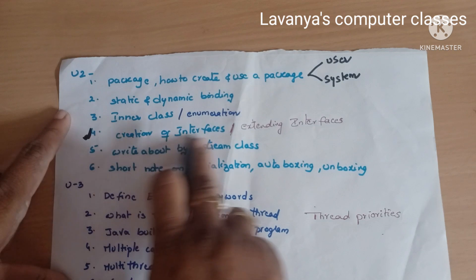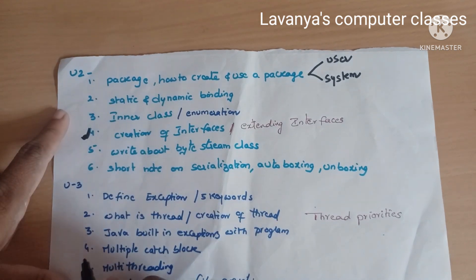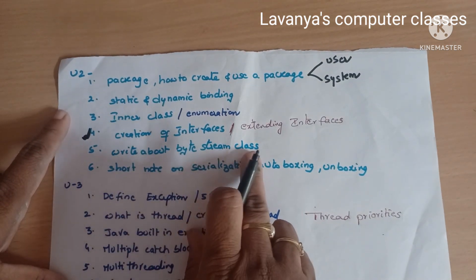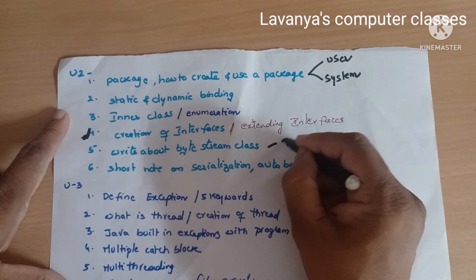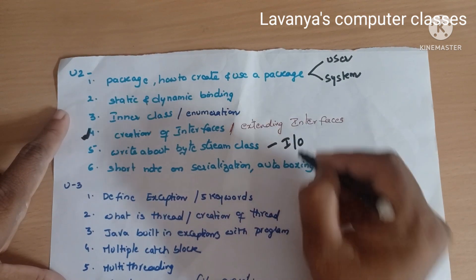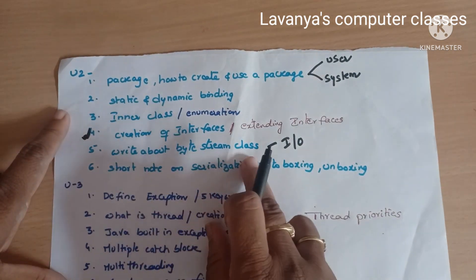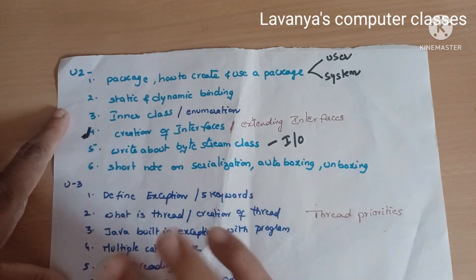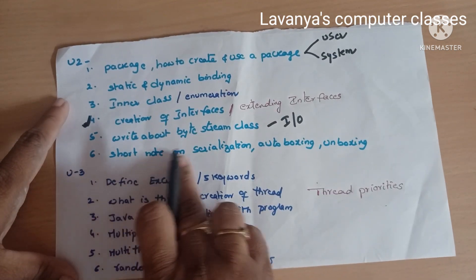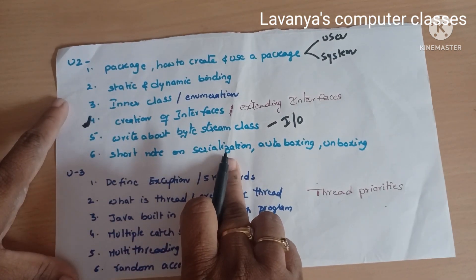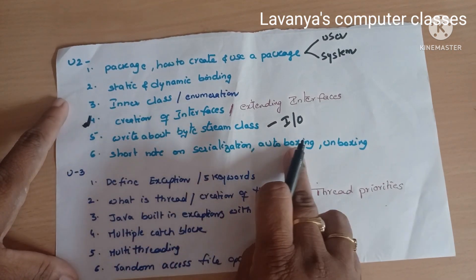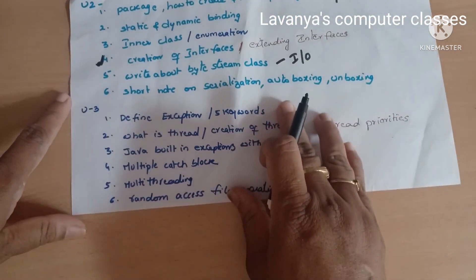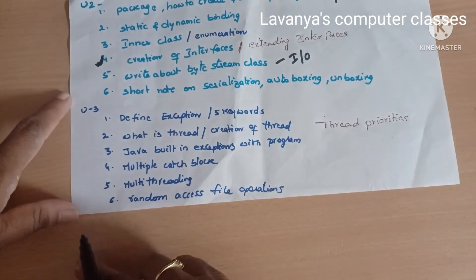Next, byte stream classes and I/O — read the entire concept with examples. Also read short notes on serialization, auto boxing, and unboxing. These complete the Unit 2 topics.